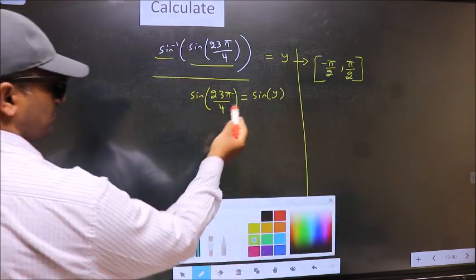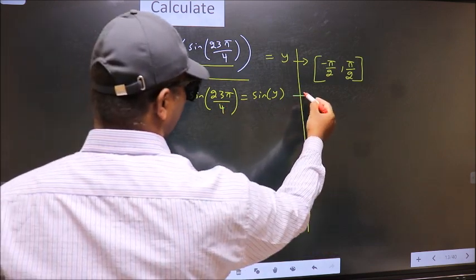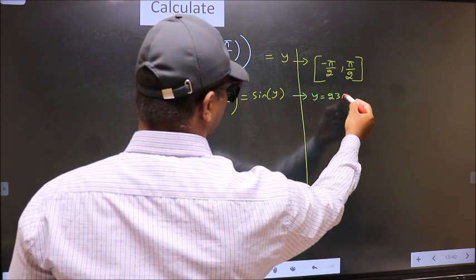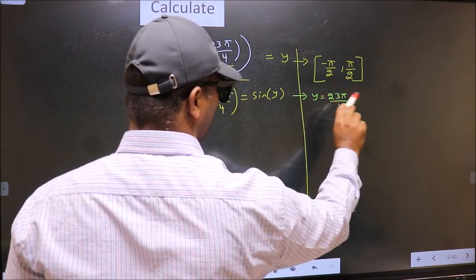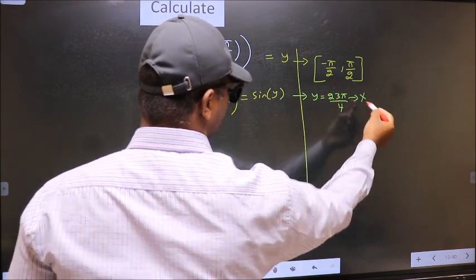Now comparing both sides we get y to be 23 pi by 4. Does this lie in this interval? No. So reject this answer.